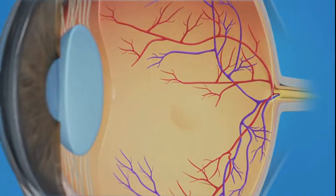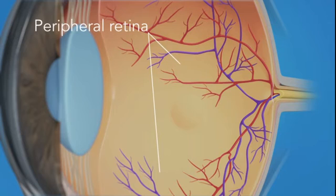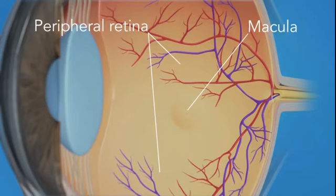The retina has two areas: the peripheral retina, which gives us our side or wide-angle vision, and the macula, the small area at the center of the retina. The macula gives us our pinpoint vision, allowing us to see detail clearly.